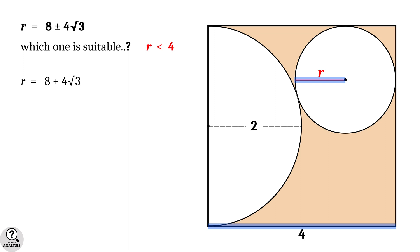But 8 + 4√3 is clearly greater than 4. So, this value is not acceptable. And so, the only possibility is r = 8 - 4√3.